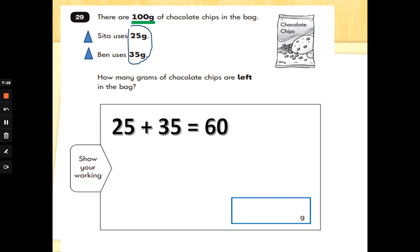And then we've got the second part to do to actually answer the question. How many grams of chocolate chips are left in the bag? Well, we started with 100. We need to do 100 take away 60. Now, I wouldn't expect you to count back here. I'd expect you to use your number bond knowledge to help you. So we know that 6 add 4 makes 10. So 60 add 40 makes 100. You will get two marks for this question if you show me how you work that out. Well done.